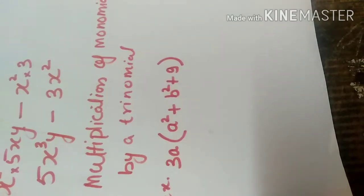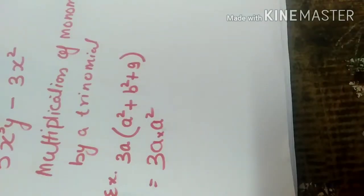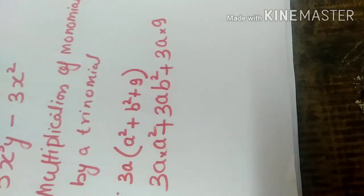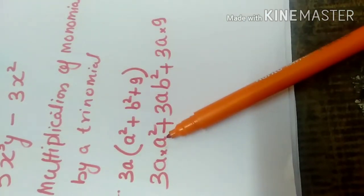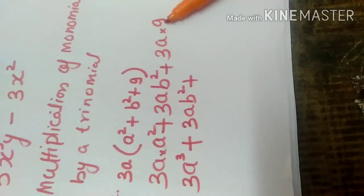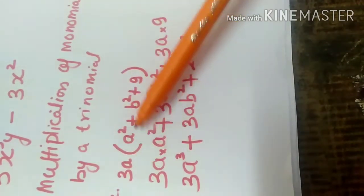Now let's see the multiplication of a monomial by a trinomial. Here the monomial 3a is multiplied to the trinomial a squared plus b squared plus 9. So 3a is multiplied to a squared giving 3a cubed, plus 3a multiplied to b squared giving 3ab squared, plus 3a into 9 giving 27a.